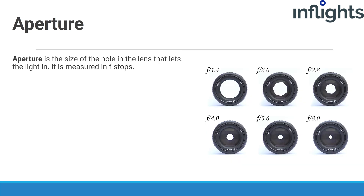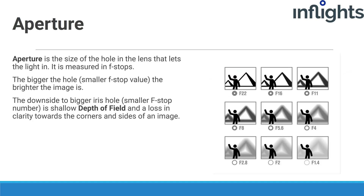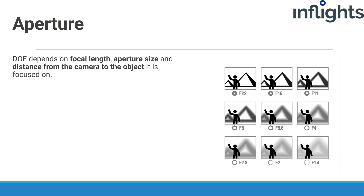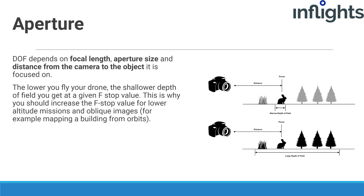Aperture is the size of the hole in the lens that allows light in, measured in f-stops. The bigger the hole, the brighter the image. For photogrammetry, the downside is a shallow depth of field and loss of clarity towards the corners and sides of the image. Depth of field is the distance between the nearest and farthest objects that are in focus. It depends on focal length, aperture size, and the distance from the camera to the object. The closer the camera is to the object, the shallower the depth of field — so the lower you fly your drone, the shallower the depth of field at a given f-stop. This is why you should increase the f-stop value for lower altitude missions and oblique images.